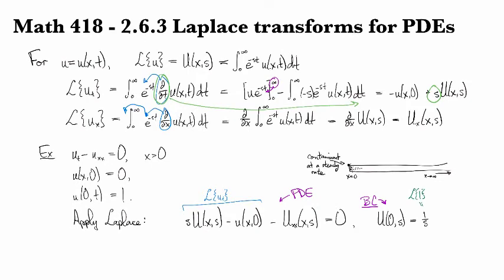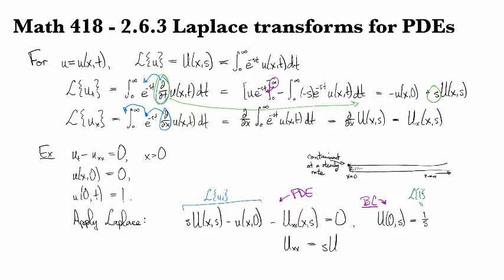So now we can solve it. So let's see. So this looks like U_xx equals s U. And you all know how to solve that.